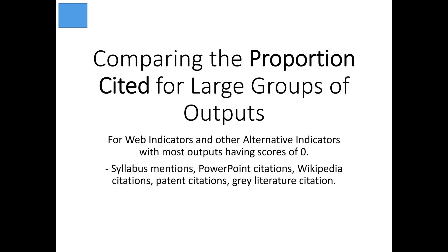This is a different type of indicator formula and it's applicable to alternative indicators where most of the outputs have scores of zero. So instead of looking at the average score, we're going to look at the proportion that have a non-zero score.